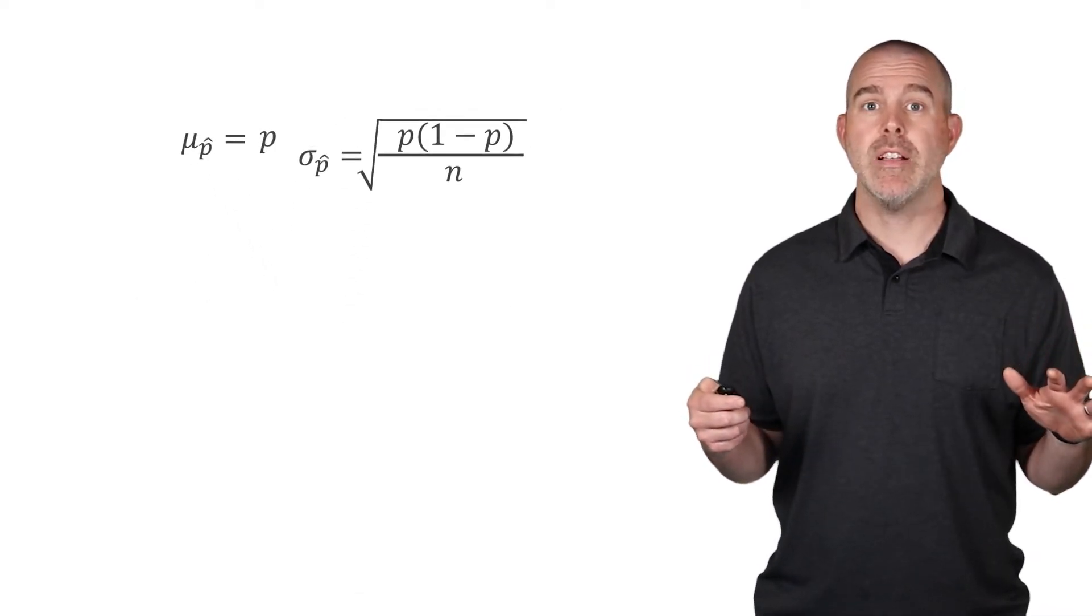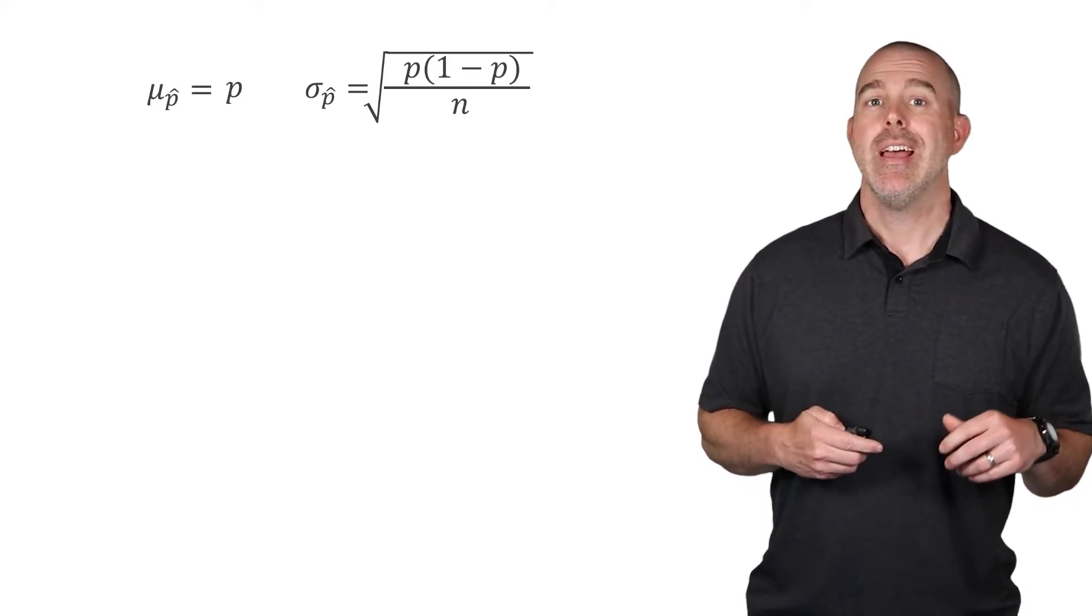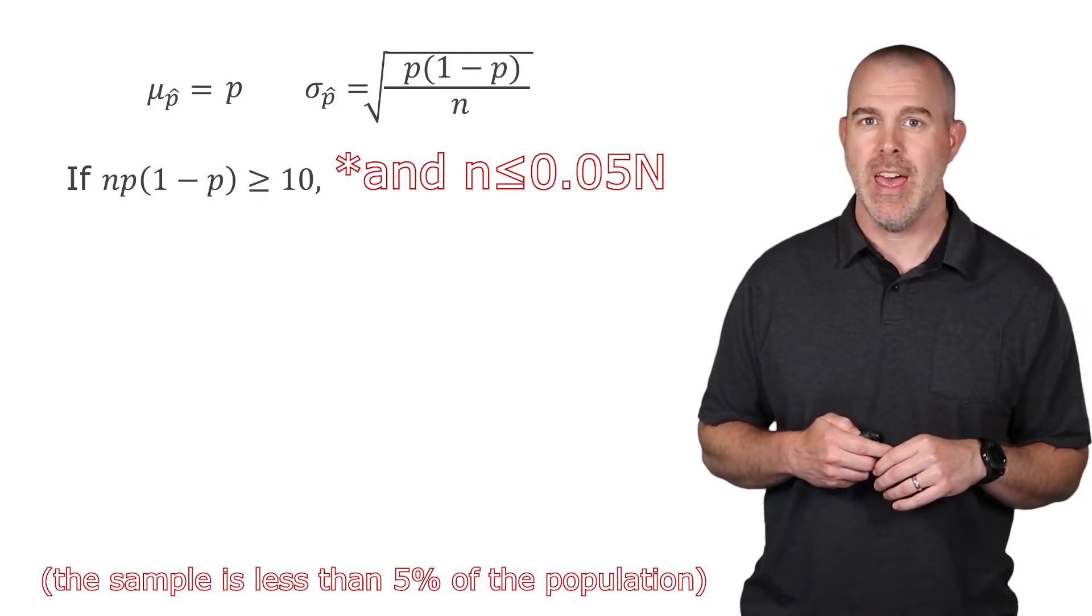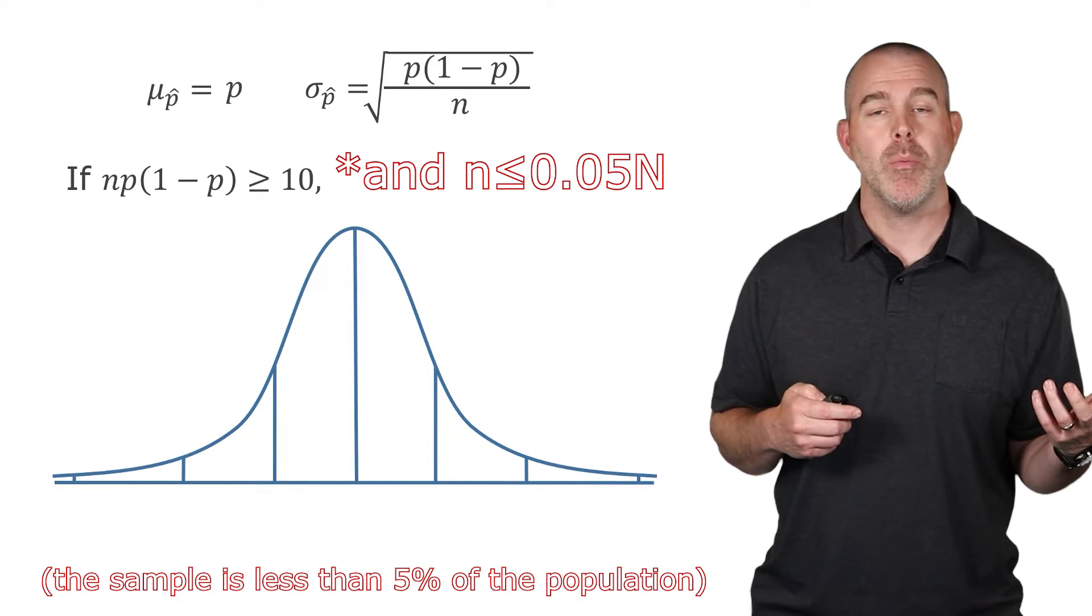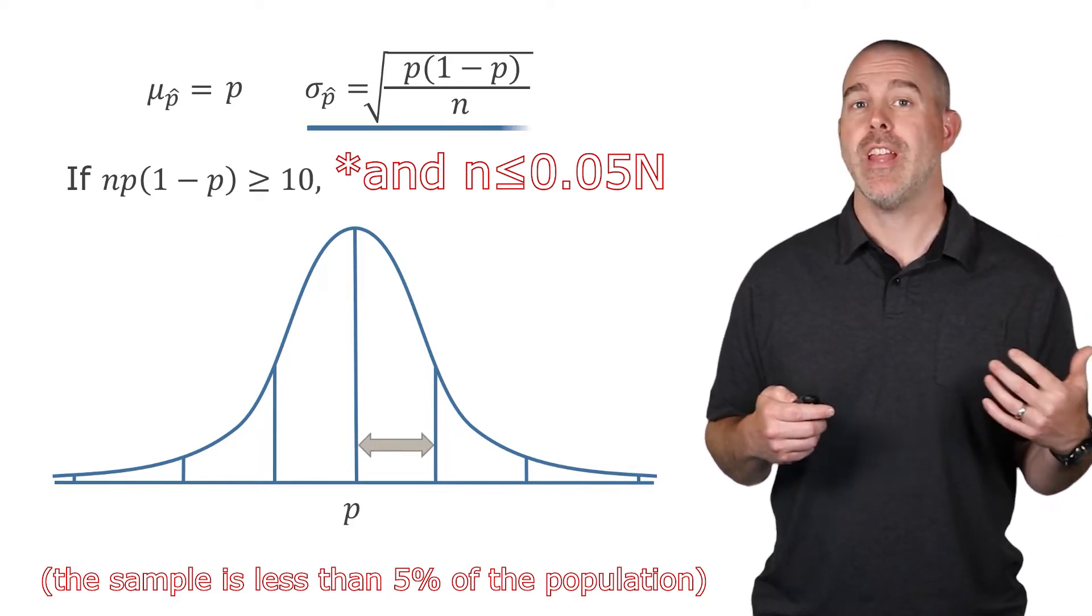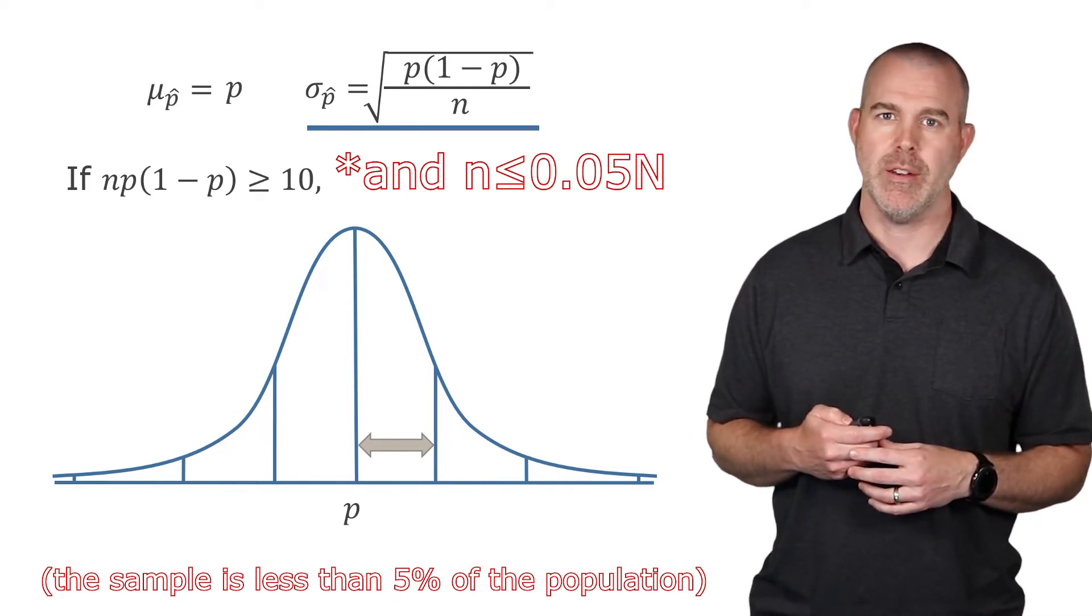So to summarize, for a sample proportion, the mean sample proportion is the population proportion and the standard deviation of the sample proportion is square root of p times 1 minus p all over n. There's some conditions here though. Remember, if n times p times 1 minus p is at least 10, then this will be approximately normally distributed with that mean in the middle p, and then the standard deviation is that square root of p times 1 minus p all over n.